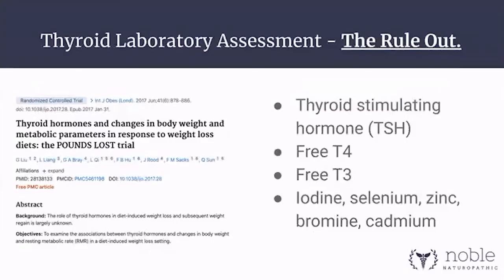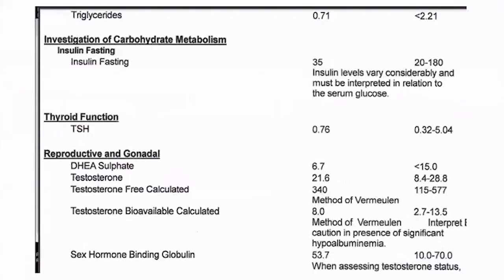I call this the rule-out, because if someone has eaten in a deficit and not lost weight, they might have hypothyroidism. Throughout today's session I'm going to share my own personal lab work so you can see what it looks like. This is a British Columbia Life Labs report — you can see where it says Thyroid Function, TSH: 0.76, which is normal, within the range of 0.32 to 5.04. I hope seeing it live like this helps your clinical practice.